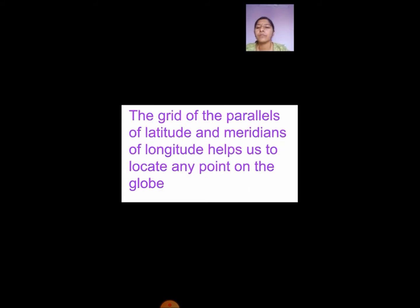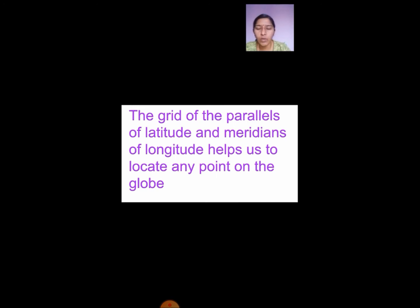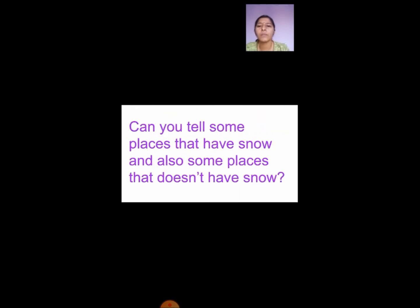The grid of parallels of latitude and meridians of longitudes helps us to locate any point on the globe. When you identify the particular grid, you can just point out the place.